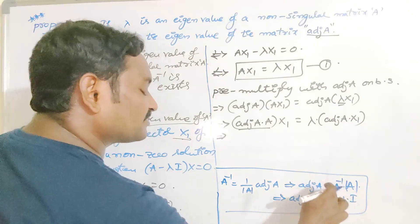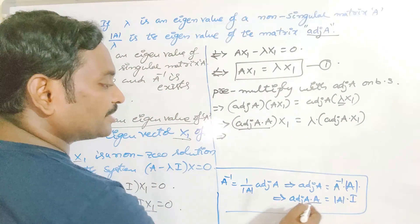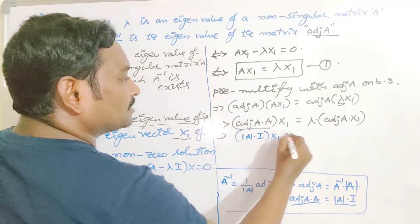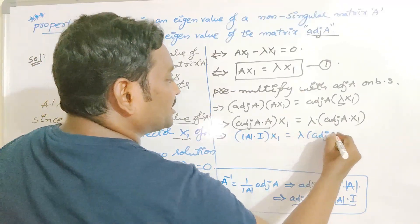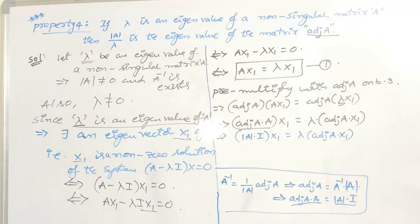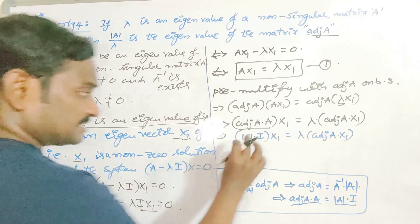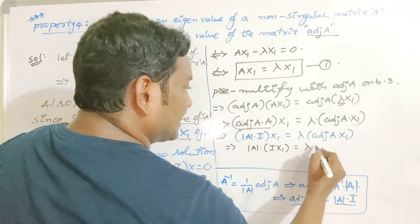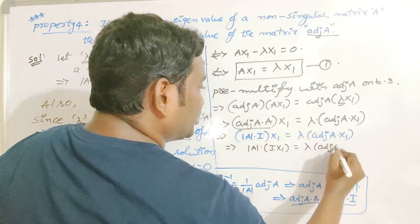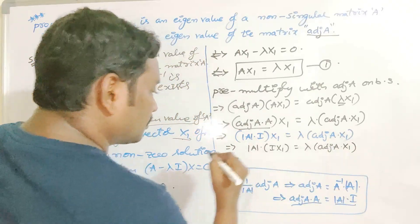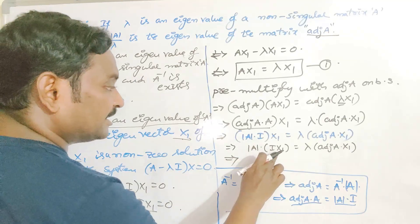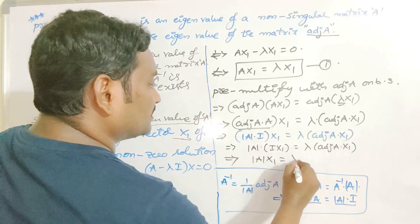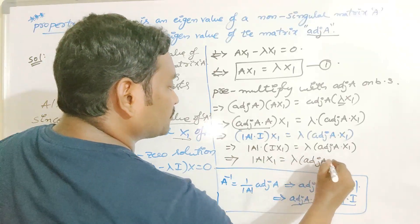Since A inverse times A equals I, we replace adjoint(A) · A with det(A) · I. So the equation becomes det(A) · I · x1 equals lambda times adjoint(A) times x1. Interchanging brackets: det(A) times I times x1 equals lambda times adjoint(A) times x1. Since I·x1 equals x1, we get det(A) times x1 equals lambda times adjoint(A) times x1.